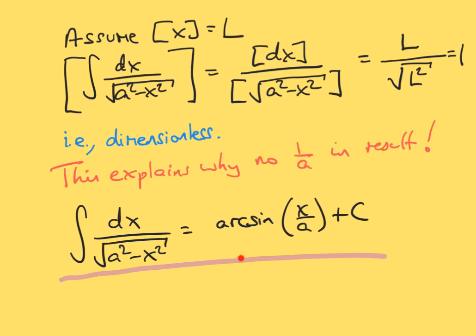To conclude: arguments like this tell you why there might or might not be factors of a, a², or similar quantities in results. They do not explain why there isn't a numerical factor, such as 3, out front — you need other calculations for that. But dimensional analysis helps you very much to understand results. Finally, if you look at the integral of dx over √(1 − x²), you can't use dimensional analysis directly, because the 1 forces x to be dimensionless. In such cases it's more interesting to look at the general case — like a² − x² — where dimensional analysis applies.